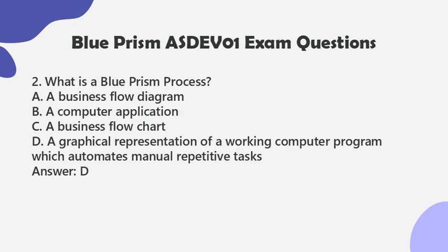Question 2: What is a Blue Prism process? a. A business flow diagram. b. A computer application. c. A business flow chart. d. A graphical representation of a working computer program which automates manual repetitive tasks. Answer: D.